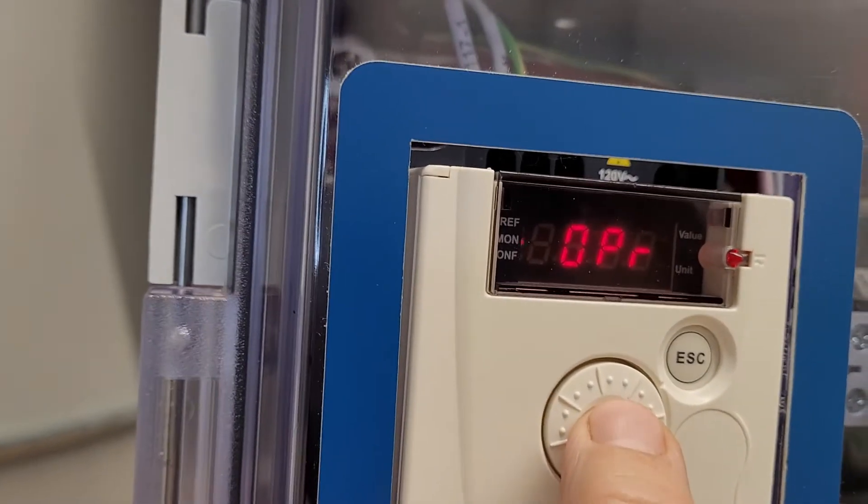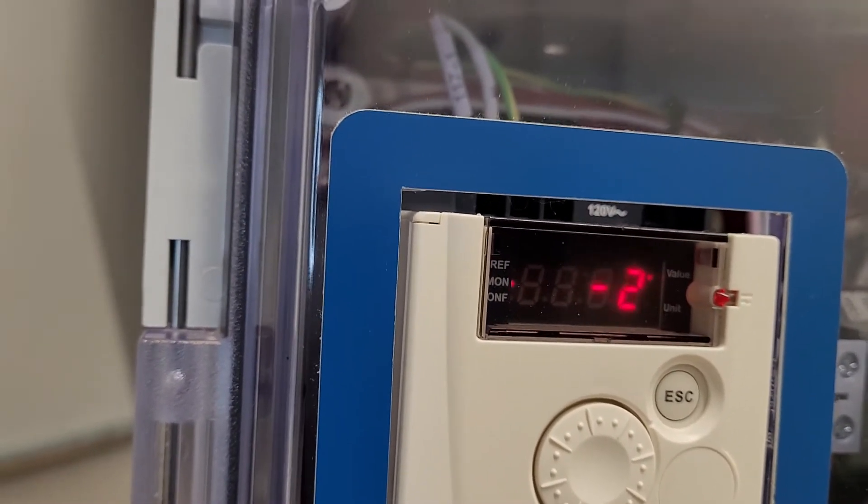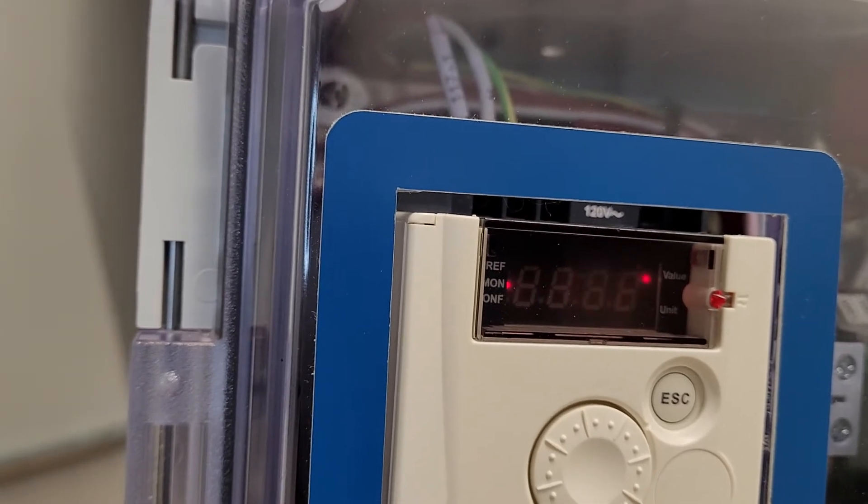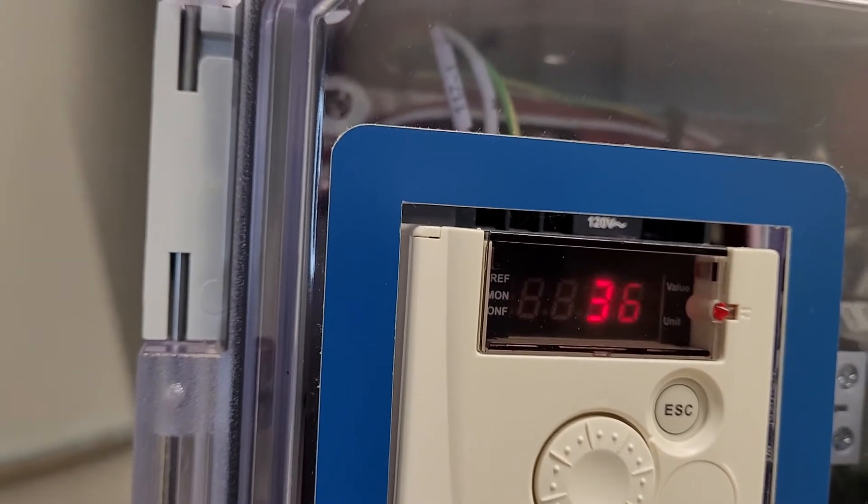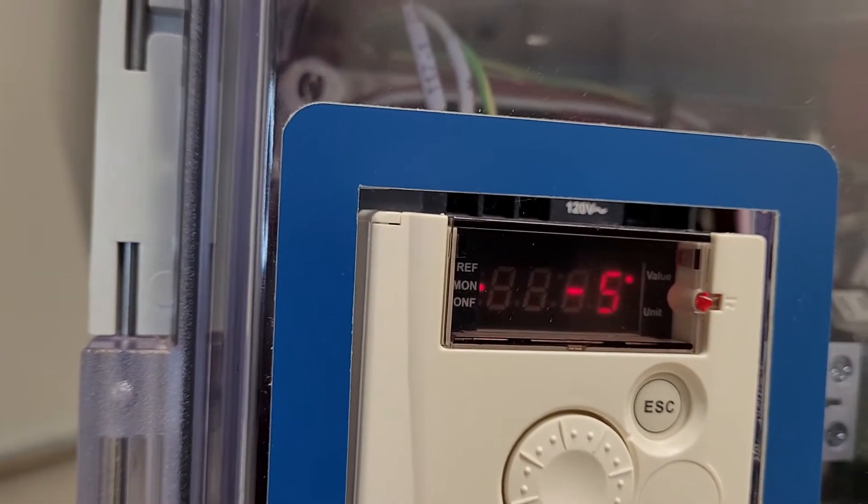The output power of the motor is around 23%. Now watch this. I will do a quick deceleration. You will see it go negative because if I slow it down really quickly, it regens back to the drive. That is why it is showing a negative value.